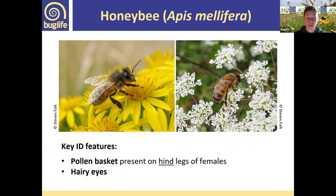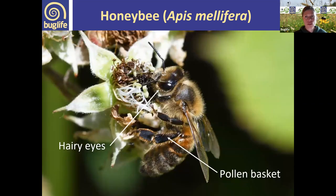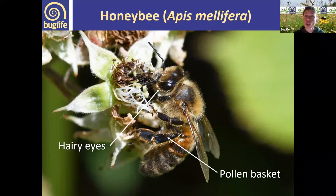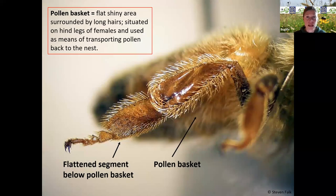Our western honeybee, Apis mellifera, we tend to think of as a domesticated bee. This species is fairly distinguishable in the field. Key features to look out for are that they have hairy eyes and a pollen basket on the hind legs of the females only — never the males. In the case of honeybees, this refers to the workers, where they gather the pollen to take back to the nest. Honeybees are the only bee species that have hairy eyes, which is a really key feature.